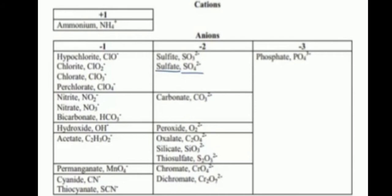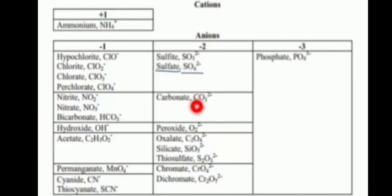Anions with charge minus two include: sulfite SO3 2-, sulfate SO4 2-, carbonate CO3 2-, peroxide, oxalate, silicate, thiosilicate, chromate, and dichromate — oxidation state minus two. Phosphate PO4 3- has oxidation state minus three.